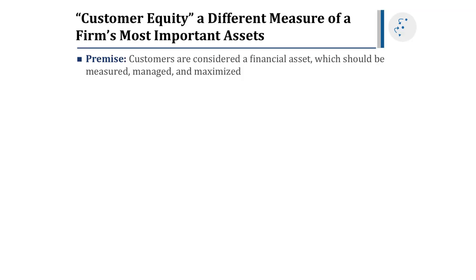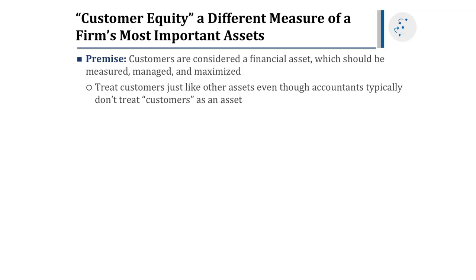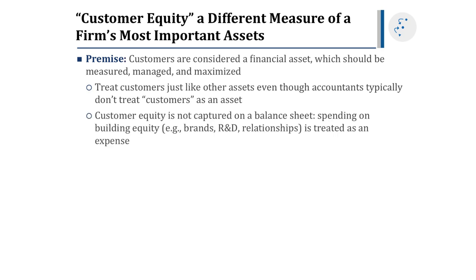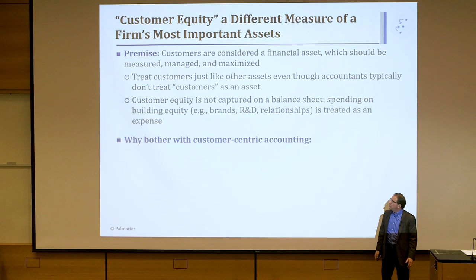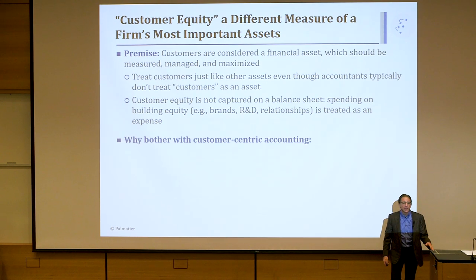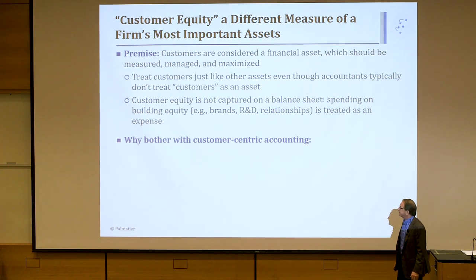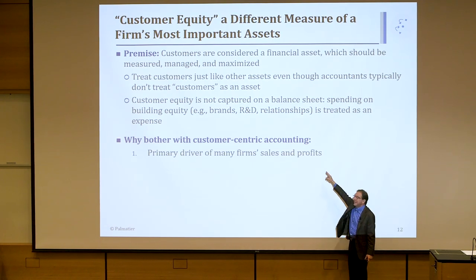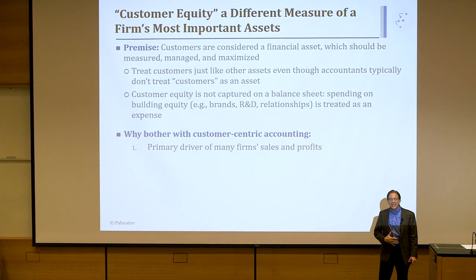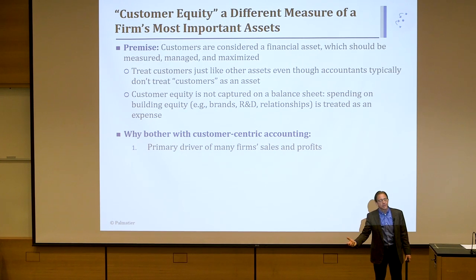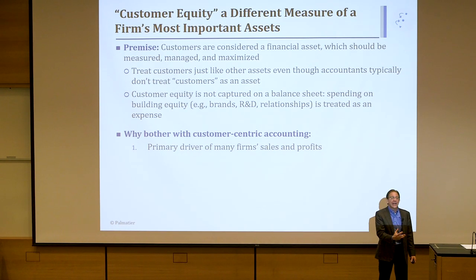The premise is customers are considered a financial asset, which should be measured, managed, and maximized — treat customers just like any other asset, even though accounting doesn't treat customers, brands, or such as an asset. Customer equity is not captured on a balance sheet; spending on building equity — brands, relationship — is treated as an expense. So why do we want to bother with customer-centric accounting? Because in many cases, Coca-Cola's brand is their number one SCA and their number one driver of sales and profit — 'I'll have a Coke' — but the firm is not capturing that in their balance sheet. That brand value doesn't show up, so we need to capture it.